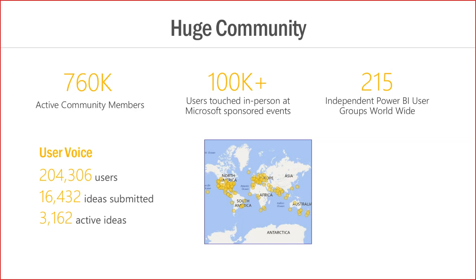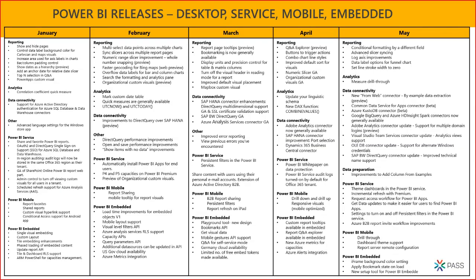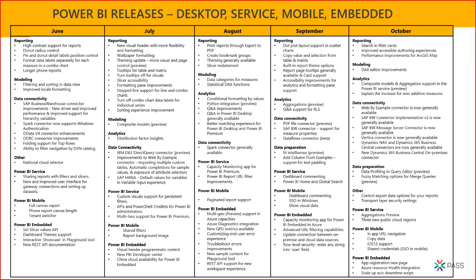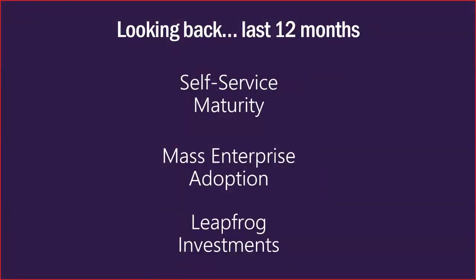About 3,000 feature ideas are still active — in the backlog or under development. We've been shipping hundreds of those features. If you look at this table, you see the number of features we've been shipping every month — this covers the first five months and then the next five months of 2018. Non-stop innovation. I'll distill what happened in the last 12 months into three buckets: self-service maturity, mass enterprise adoption, and where we're heading in the future.